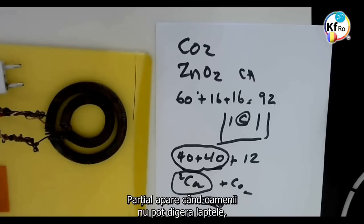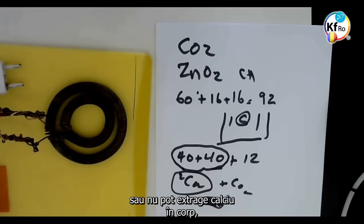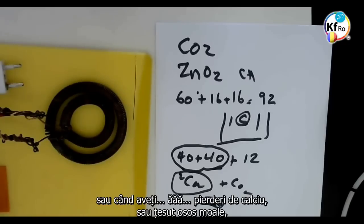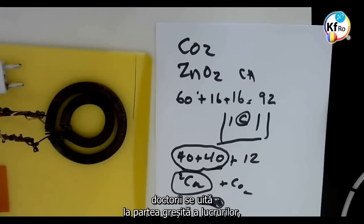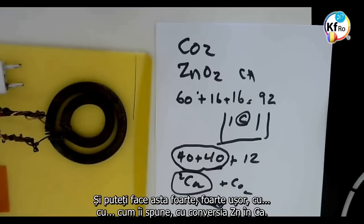This is how Calcium is created in the body of the Man for bone structure. Partially, when people who cannot digest milk or cannot take Calcium in the body, or when you have calcium loss or soft bone tissue, doctors look at the wrong side of the thing. You can compensate it with Zinc, and you can do that very easily with conversion of Zinc to Calcium.